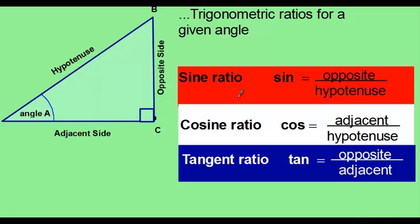We define the ratios as follows: the sine is the opposite side over the hypotenuse, the cosine is the adjacent side over the hypotenuse, and the tangent is the opposite over the adjacent.